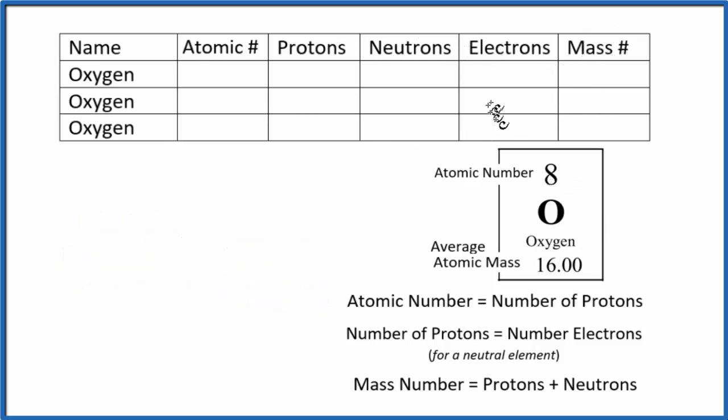So we have this table here, then we have some information. This is from the periodic table, and we can see that we have an atomic number of 8 for oxygen. And it really doesn't matter what isotope we have, it's always going to be 8. Oxygen will always have an atomic number of 8, that's what makes it oxygen.